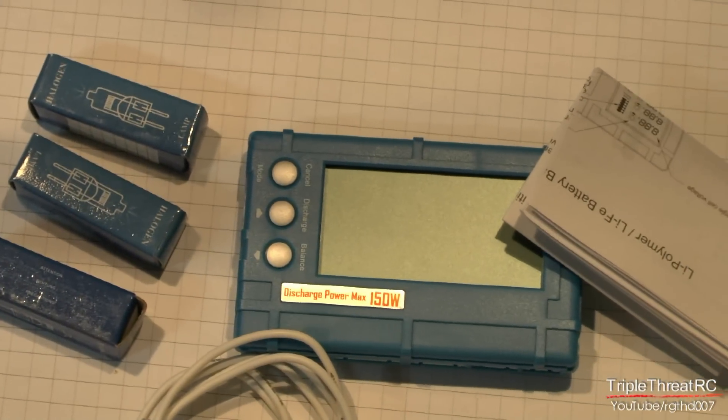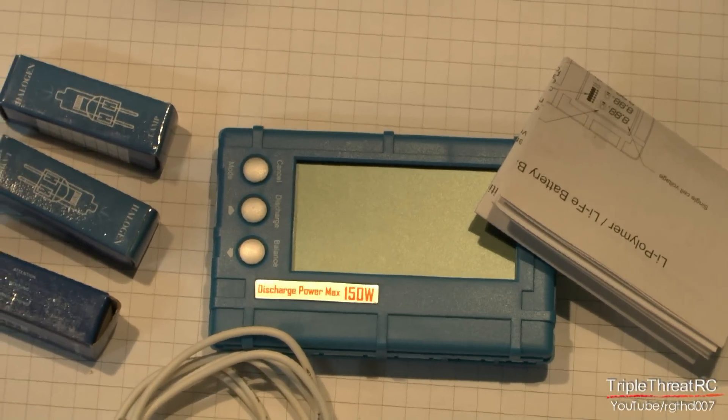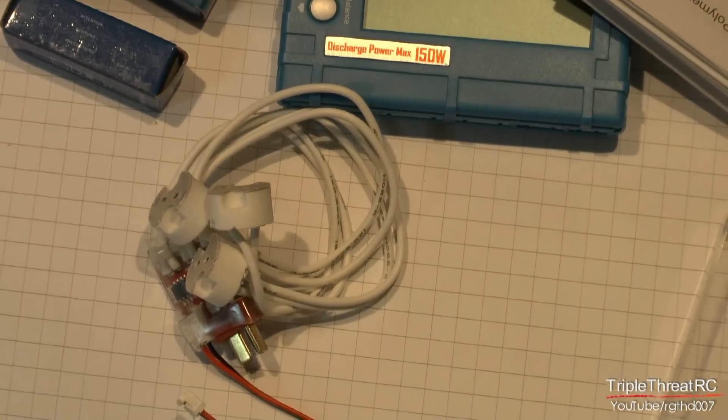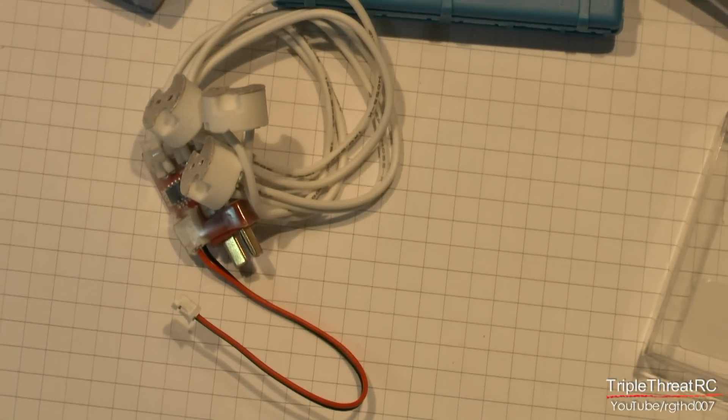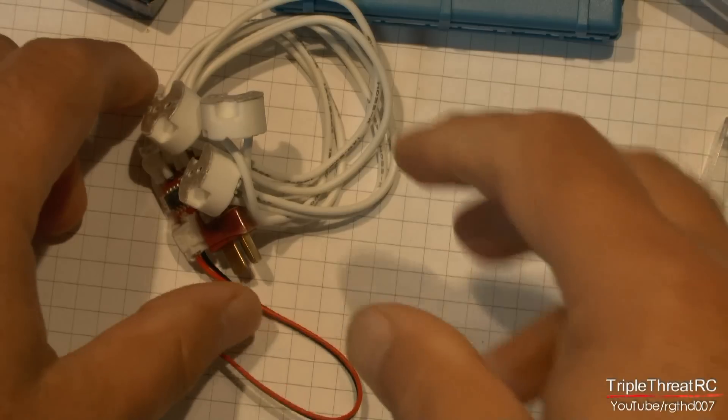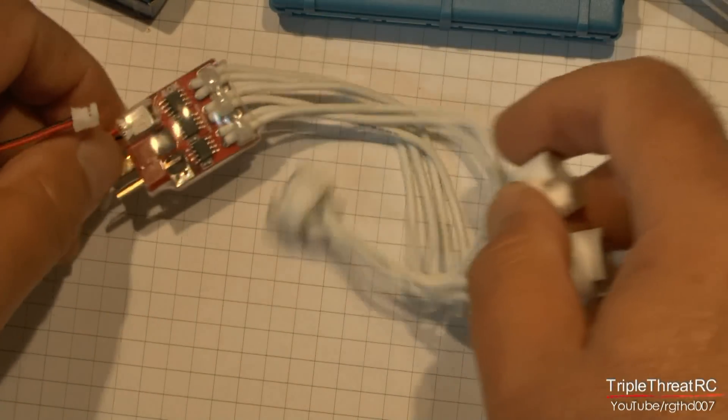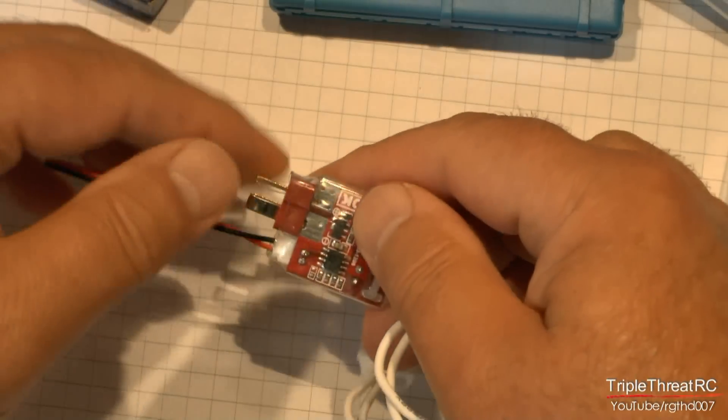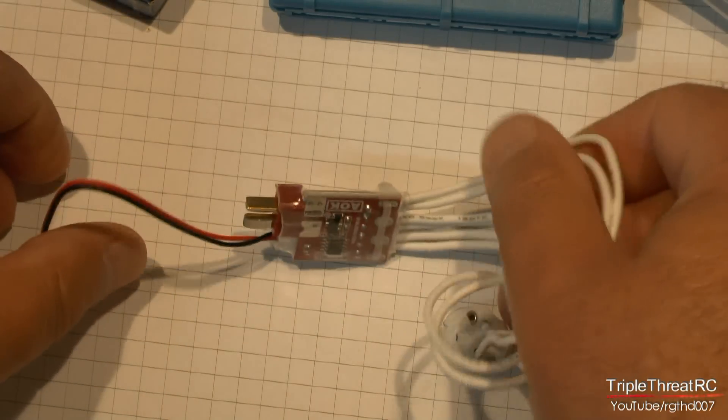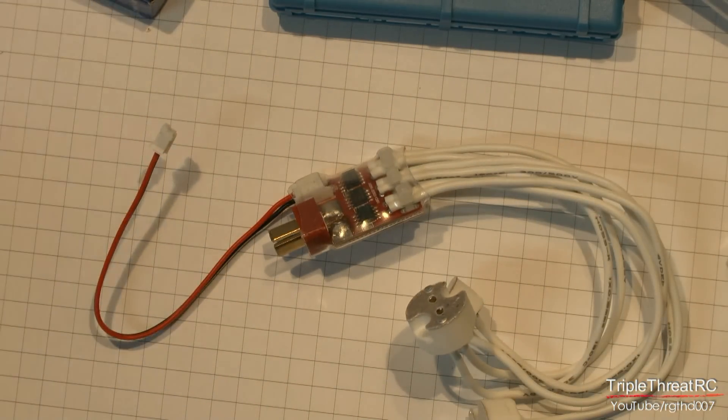As you can see in the video, the unit came very well packed. There's no way it's going to suffer any damage in shipping. The only hassle are the white wires that you see here that are leading to the 350 watt light bulbs that provide the load to draw down your packs.